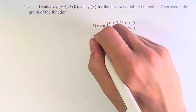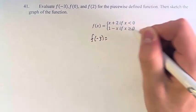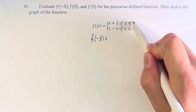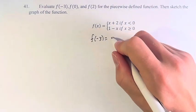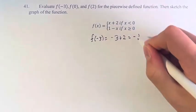So what we're going to do is just find f of negative 3. Negative 3 is less than 0, so we're going to use x plus 2. It becomes negative 3 plus 2 equals negative 1.